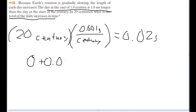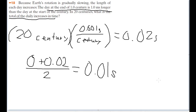So that's 0 plus 0.02, divided by 2. We're taking the average: the value of extra time today — 0 — plus the value of the extra time 20 centuries from now — 0.02 — and dividing by 2, because those are the two values we're averaging. So the average time is 0.01 seconds. On average, throughout the next 20 centuries, there's an average of 0.01 seconds of extra time each day, because this increase is occurring uniformly.